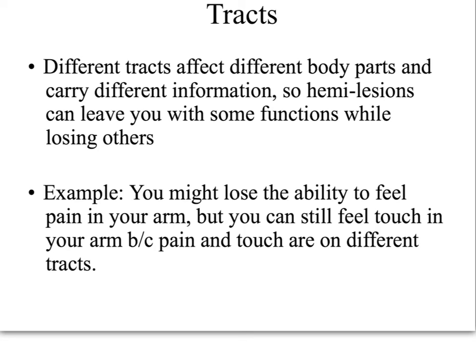In a car accident scenario where your body is thrown around, we might not sever the cord all the way through, but we can damage parts of the cord through that physical trauma — those vertebrae pushing on those tracts. When that happens, maybe one or two tracts die and the rest of the cord remains healthy. That can cause what's called a hemi lesion, which leaves you with some functions while you lose others. For example, you might lose the ability to feel pain in your arm, but in the same area you could still feel touch, because pain and touch run on different tracts and only the pain tract was damaged.